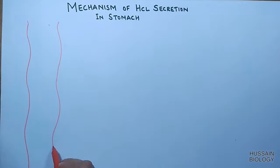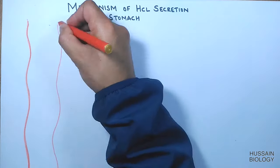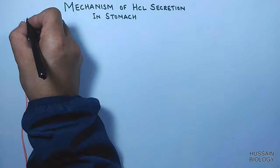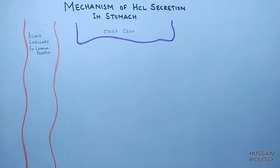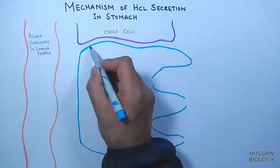If we see the structure around the parietal cells, there is blood capillary supply on the left in the lamina propria. There are chief cells, and in between the chief cells we have the parietal cell as shown in the diagram.